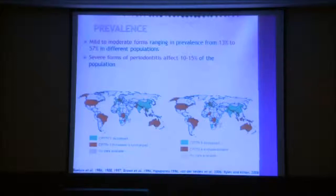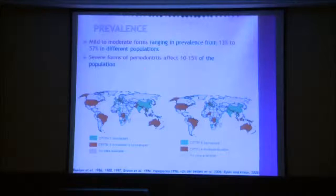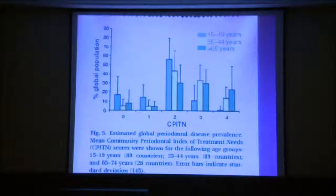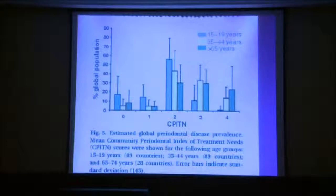From epidemiologic studies, it's known that the prevalence of mild to moderate forms of periodontitis ranges from 13% to 57%, and the severe form from 10% to 15% — a huge number of patients that should be treated. The severity of disease increases with age, as confirmed by this graph where code 3 of the CPITN index indicates moderate and code 4 indicates severe form of disease.